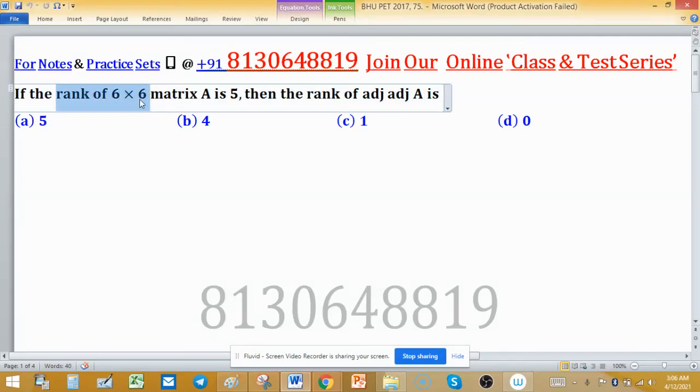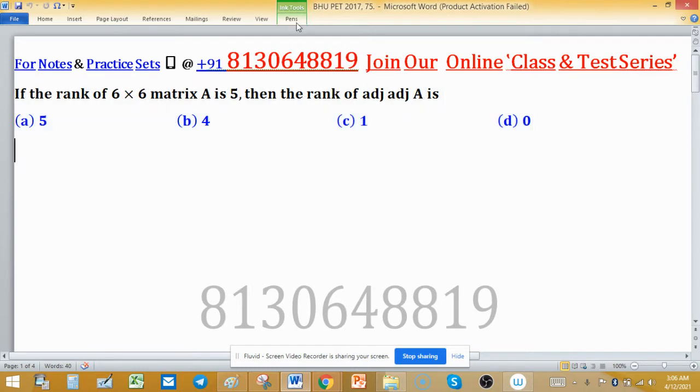If the rank of a 6 by 6 matrix A is 5, then the rank of adjoint of adjoint A is... The adjoint is taken two times. The size of matrix A is 6 by 6, and its rank is 5. We know the result for this. If you don't know this result, then you may see this problem as harder to solve.